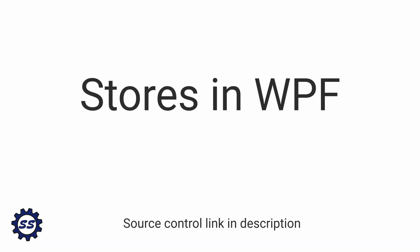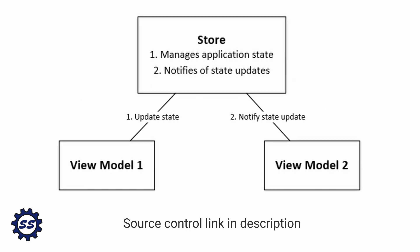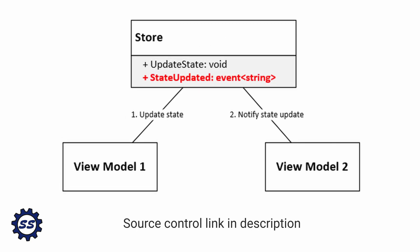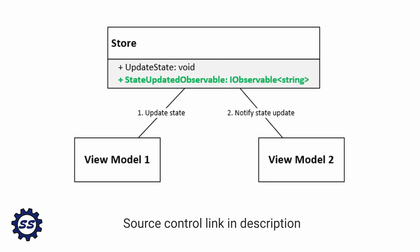In various WPF applications we built across this channel, I typically mention the concept of stores. Stores in WPF applications manage application state and also act as mediators that allow us to communicate between view models. The key thing about stores is that they use .NET events to communicate between view models and ultimately keep data in sync. But .NET events aren't as pleasant to use as reactive extensions, so in this demo we're going to use reactive extensions instead, and you can apply these concepts to any object that acts as a mediator or uses .NET events.